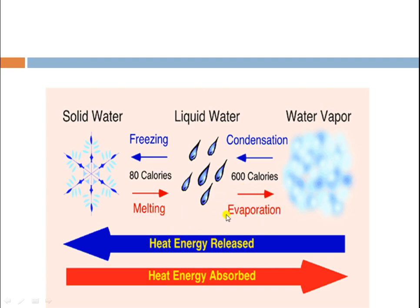There are two processes that occur because of the absorption of heat. When heat is released from the vapor phase, it converts into liquid — the process is known as condensation. When heat is released from liquid water, it converts into solid water or ice — the process is known as freezing.